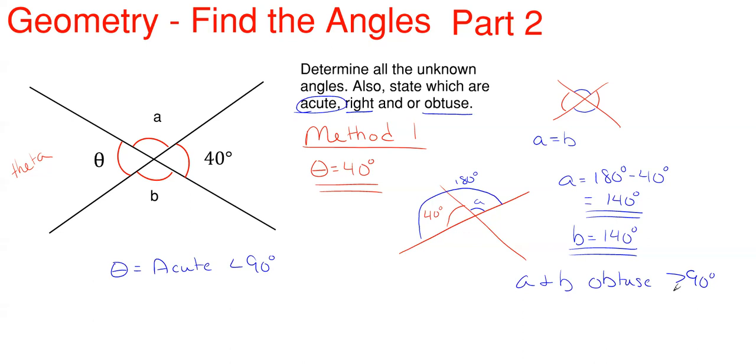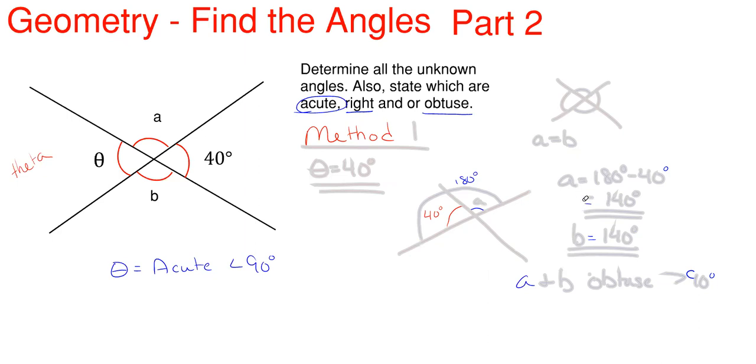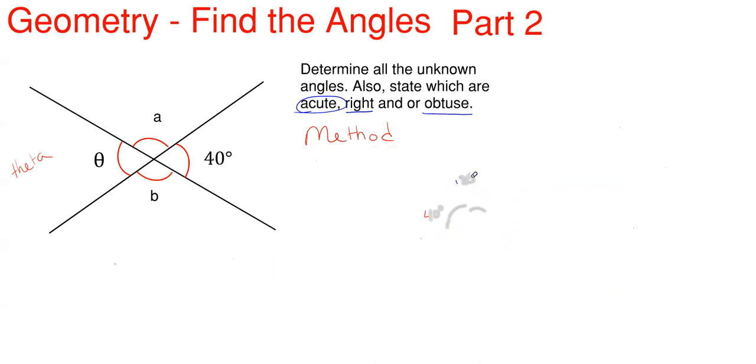So that's method number one. You can see how fast that can be if you get a little bit of practice with this. But if you're a little bit slower and you couldn't follow along there, let's go on to method number two. Method number two will be a little bit slower. What we're going to do is we're going to break this picture apart and we are going to look at each individual portion.